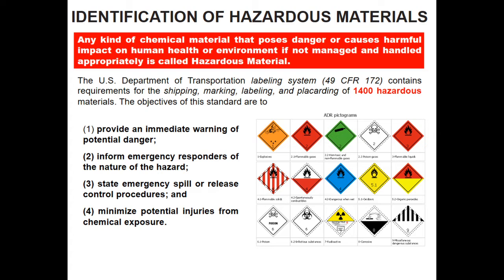For proper shipping, marking, labeling, and placarding, the U.S. DOT has fixed standards that must be followed. This placarding or signage gives immediate warning of potential danger. For example, a truck carrying diesel with a flammable liquids sign lets general people understand the truck is dangerous. It also informs emergency responders of the nature of the hazard — for example, if the truck gets into an accident and there is a spillage of diesel on the road.